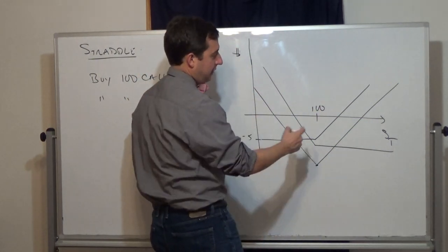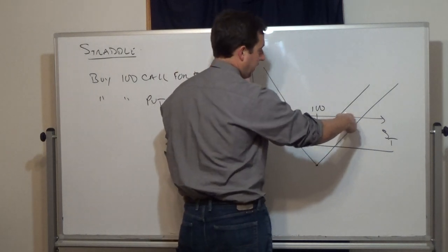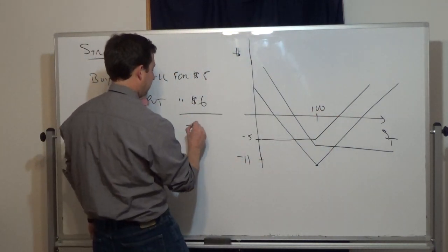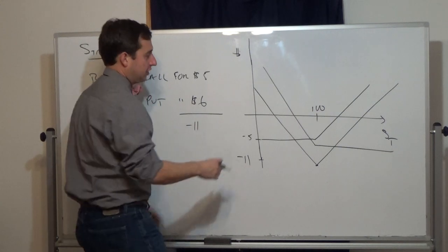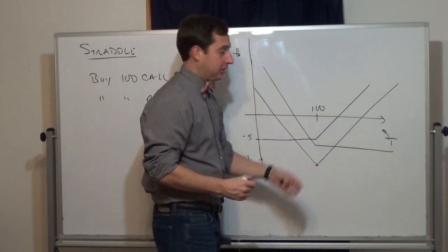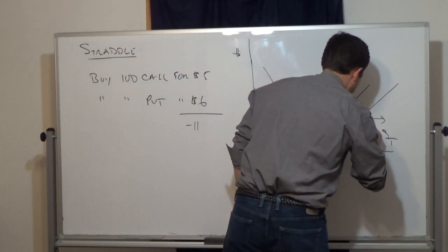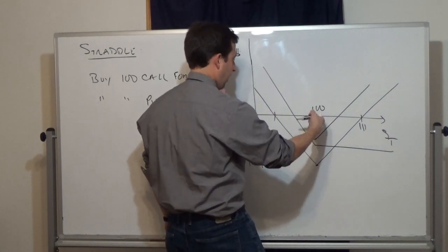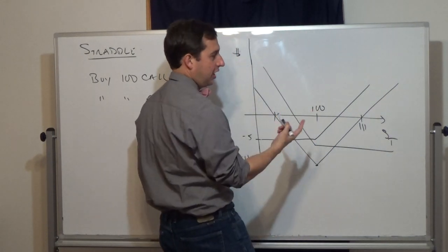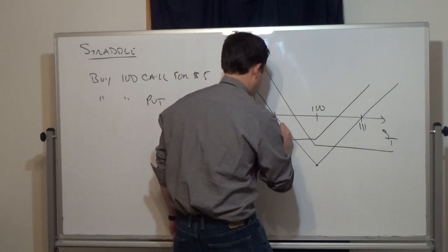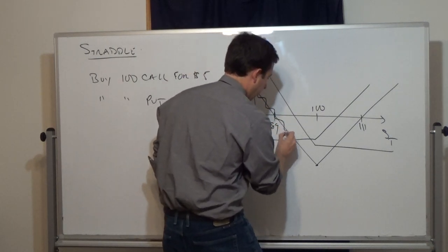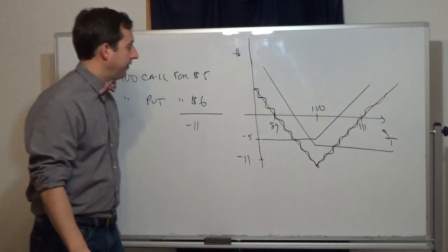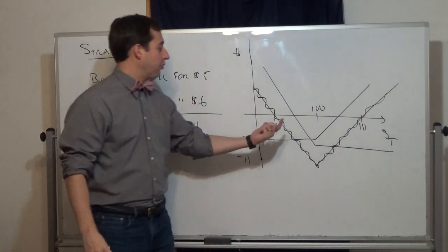This side goes up with a slope of one and this side has a slope of negative one. Our net cost is $11, so we break even at $100 plus $11 = $111 when the underlying stock price is $111, and at $100 minus $11 = $89 on the downside.